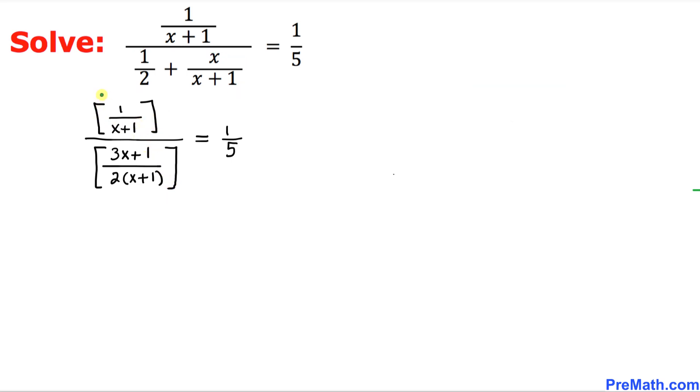And now in the next step, since this on the top is being divided by this one, I can write 1 over x plus 1 in the bracket. Since it's dividing, I'm going to put divided by, like this symbol, and then 3x plus 1 divided by 2 times x plus 1. So far, so good. And on the right-hand side, we have 1 fifth.